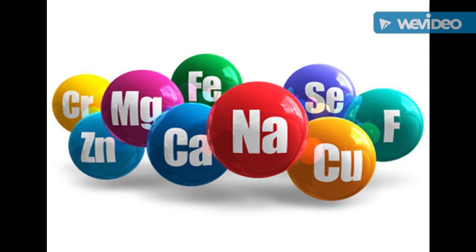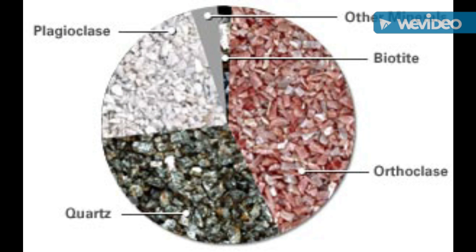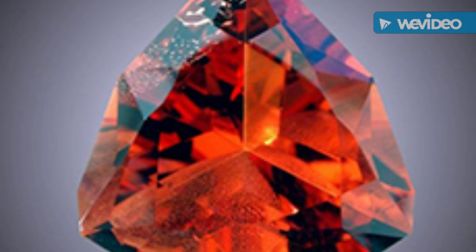The eight mineral groups include native elements — such as copper, silver, gold, nickel, iron, graphite, and diamond — sulfates, of which pyrite is an example, and oxides, of which hematite is an example, as well as silicates, phosphates, and so on and so forth.